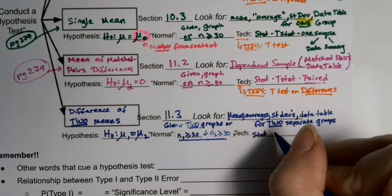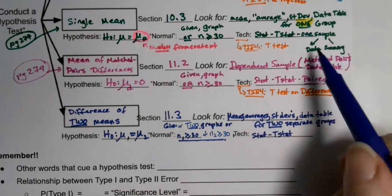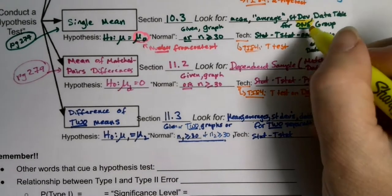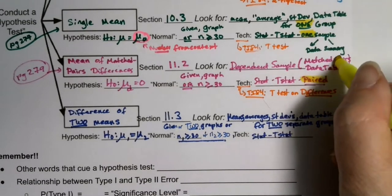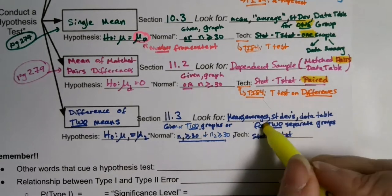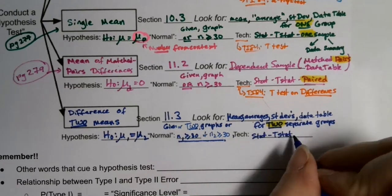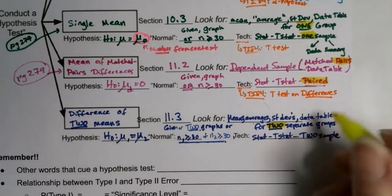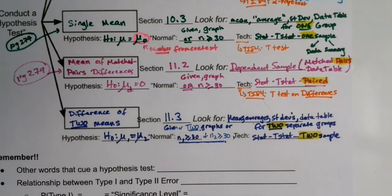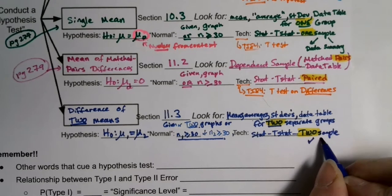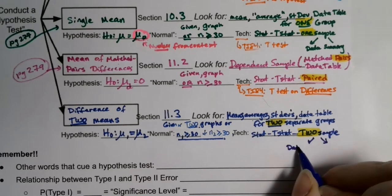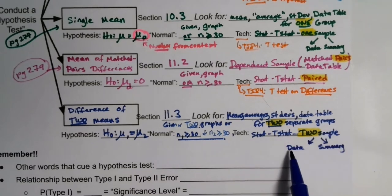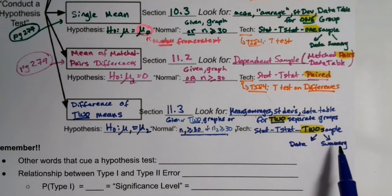Technology-wise, it's stat → T-stat, just like the ones above. For all three of these you go to stat → T-stat. The one-sample test was one-sample, the matched pairs was paired, and this one — two groups — is two-sample. From there you'll choose data or summary depending on what you have. If you have two big data tables, one for each group, you'll choose data; if you have a paragraph with summary statistics, you'll choose summary.